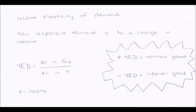So income elasticity of demand is how much demand changes when there is a change in income, and just like all the other elasticities we can work this out mathematically using a formula. YED, or income elasticity of demand — Y meaning income — equals percentage change in quantity demanded divided by percentage change in income.